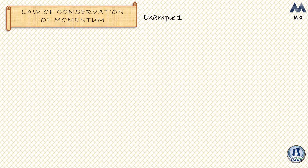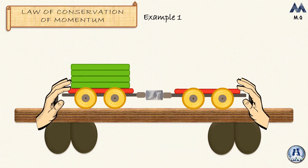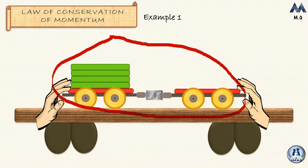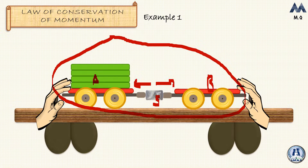Now let's explain the law of conservation of momentum with some real-world examples. We have two trolleys with a compressed spring in between them — this is our conserved system with no external forces. The spring is compressed, so when released it exerts an internal force on each trolley. Those are internal forces because objects A and B and the spring are all part of the same system. Whatever interactions happen between them, we're dealing with internal forces only.